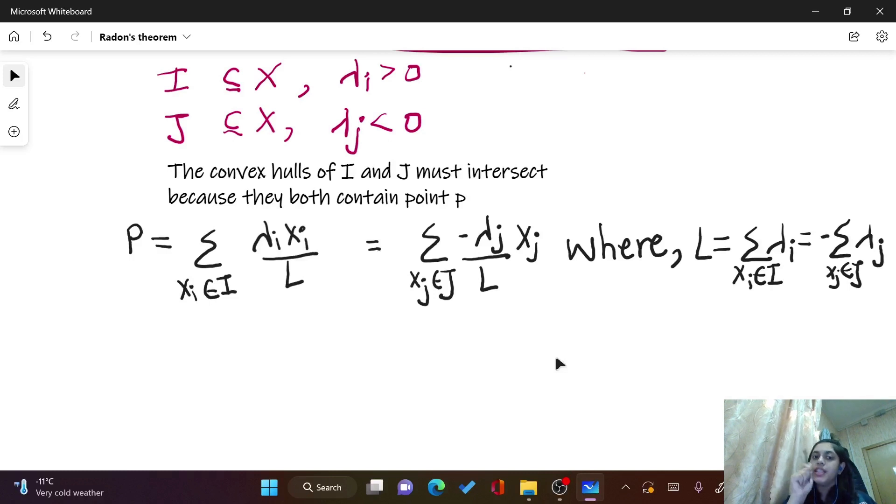We know that the convex hull of I and J must intersect because they both contain a point P which can be expressed in the following form: it can be expressed as the convex combination of I and as the convex combination of the set J. So P belongs to the convex combination of both sets.